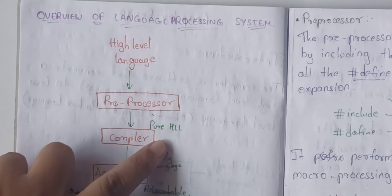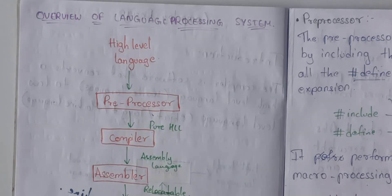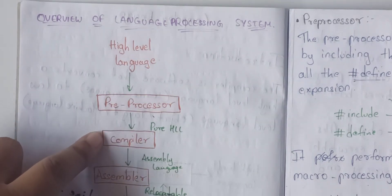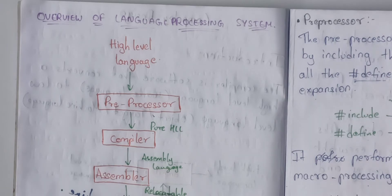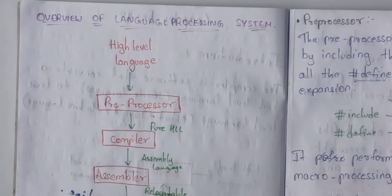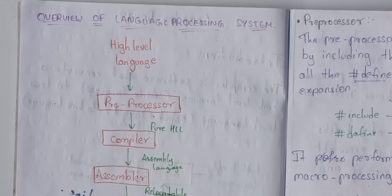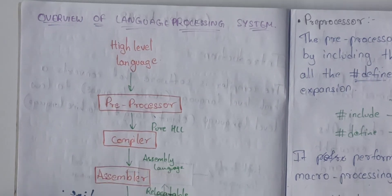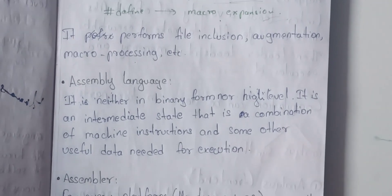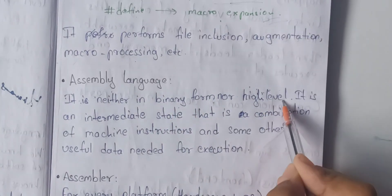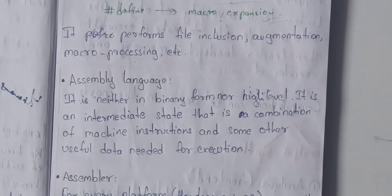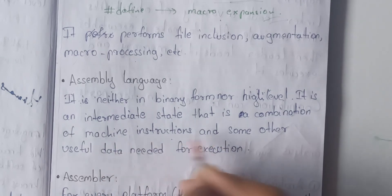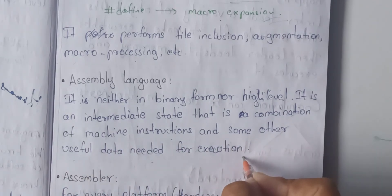After preprocessing, we have pure high level language — no more hash define or hash include. Then we pass it to the compiler. The compiler converts high level language to assembly language. Assembly language is neither in binary form nor high level; it is an intermediate form — a combination of machine instructions and some useful data needed for execution.